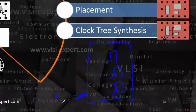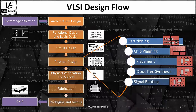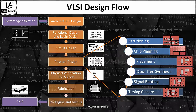After clock tree synthesis comes signal routing. Till now we talked about the clock; now we talk about the data signal — that means connecting different gates, the input and output, properly. When I say routing, I mean physical wire — I'm talking about metal one, metal two, metal three — we are going to route it. And then timing closure. It looks like timing closure is at the end, but actually timing closure is a part of each and every stage. In the next three or four slides I will discuss timing closure at each particular stage.